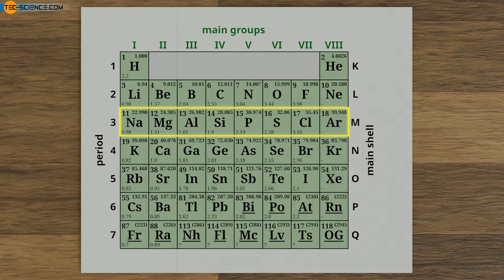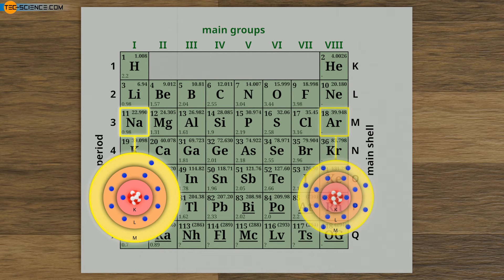Within a period, however, the atom diameter decreases from left to right. The reason is the increasing number of protons with increasing atomic number, which also increases the number of electrons in the shell. The more protons a nucleus contains, the higher its charge, resulting in a stronger force of attraction between the nucleus and the shell. Since the number of shells does not increase within a period, this stronger attraction binds the shell much closer to the nucleus — therefore, atomic diameter decreases with increasing atomic number within a period.